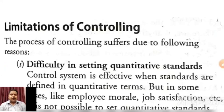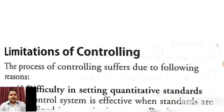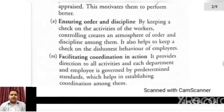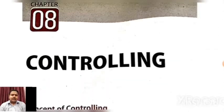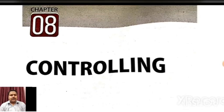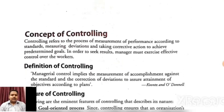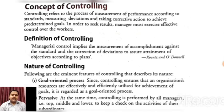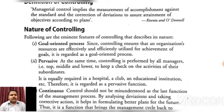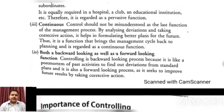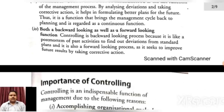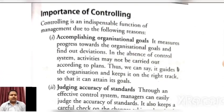Good morning students. In the last video of Class 12 Business Studies, we discussed chapter number eight, that is Controlling. Under this chapter we discussed the concept and definition of controlling, nature and features of controlling — that is goal oriented, pervasive, continuous, backward looking as well as forward looking — and also the importance of controlling.